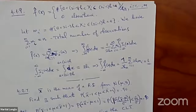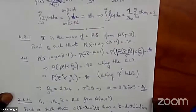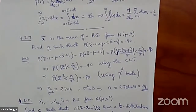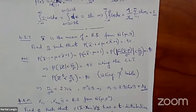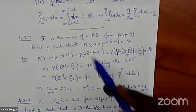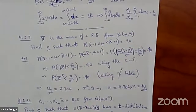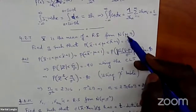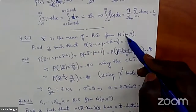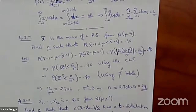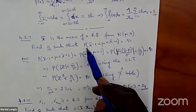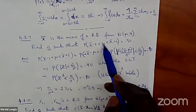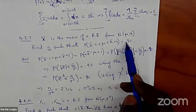Problem 4.27: x̄ is the mean of a random sample from a normal distribution with mean μ and variance 9. Find n such that P(x̄ − 1 < μ < x̄ + 1) = 0.9.